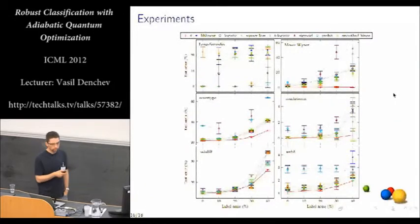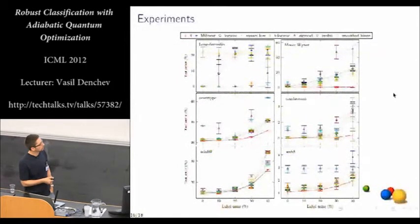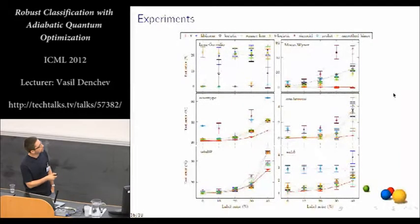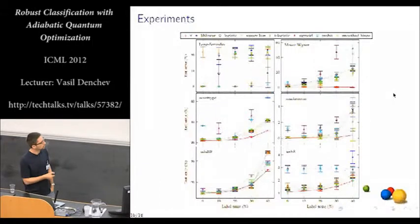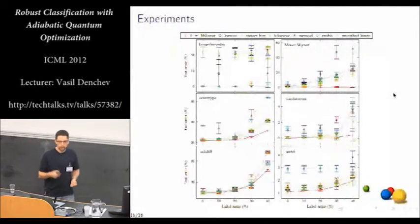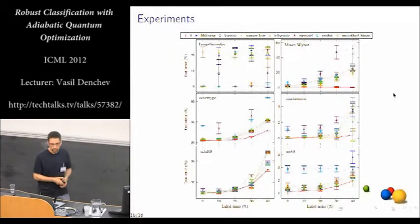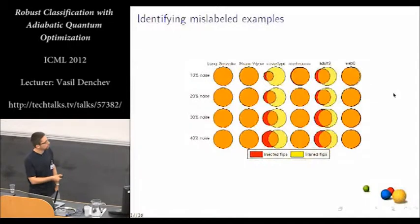And here are our experimental results. We used six data sets. Two of them are synthetic and are designed to bring out the deficiency of convex losses. And these four are UCI data sets. We compared with a number of other methods. And the experiments showed that actually our q loss optimized with a discrete optimization method performed the best. It was the most robust with respect to increasing label noise. And also there are indications that if we are able to run these experiments on the quantum hardware also, we should get even better robustness.